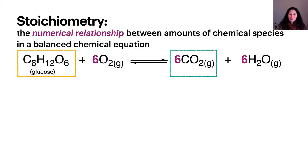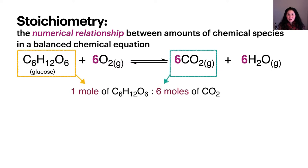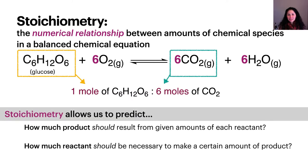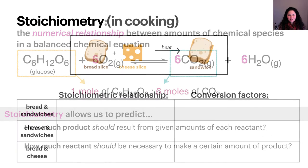For example, the stoichiometric relationship between glucose and carbon dioxide in this equation is one mole of glucose to six moles of carbon dioxide. Stoichiometric relationships can be useful for predicting the amounts of product that should form from some given amount of reactant, and vice versa. Stoichiometry can also be applied to find the amount of reactant we would need to make a given amount of product.